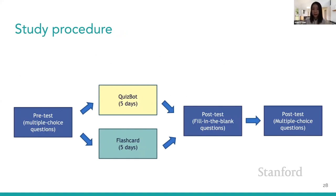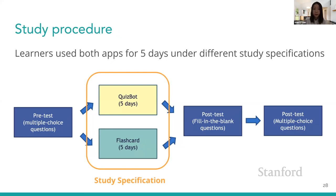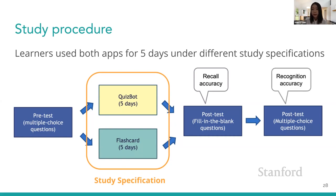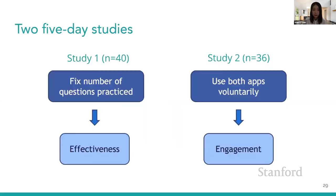Here's how I designed my user study procedure. Students first came in to take a pre-test to measure their prior knowledge. Then they started to use both apps for five days. On the last day, students took a fill-in-the-blank post-test to measure recall accuracy, followed by a multiple-choice post-test to measure recognition accuracy. I ran two user studies: the first was a within-subject study with a fixed number of items practiced, and the second was an observation study where people used both apps voluntarily for any amount of time they wanted, designed to measure engagement.